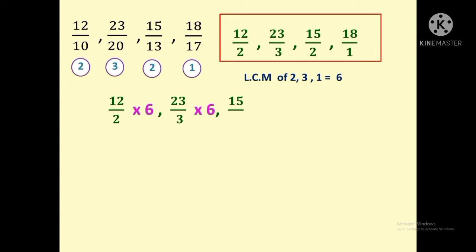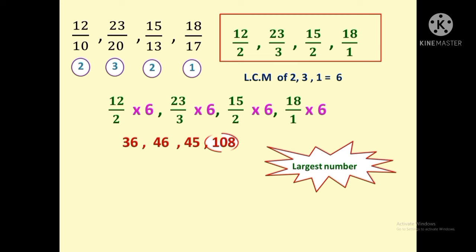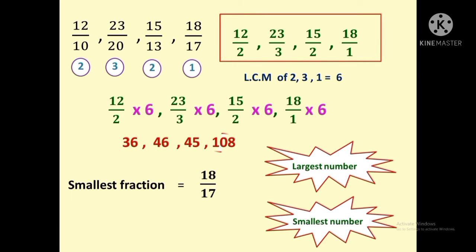The calculations are: 12 by 2 × 6 = 36; 23 by 3 × 6 = 46; 15 by 2 × 6 = 45; and 18 by 1 × 6 = 108. Now we have converted the fractions into numbers. Next, we apply the trick: find the largest number among these — which is 108. The corresponding original fraction for the largest number is the smallest fraction, so the smallest fraction is 18 by 17. To find the largest fraction, find the smallest number, which is 36, and its corresponding fraction 12 by 10 is the largest fraction.